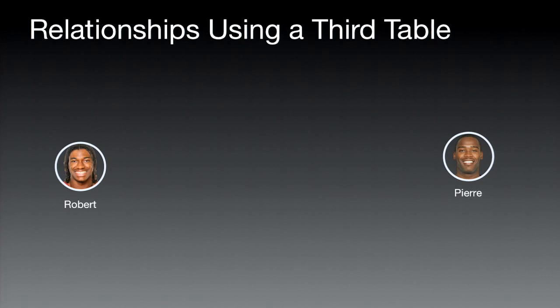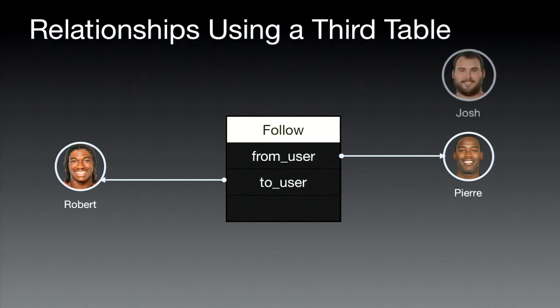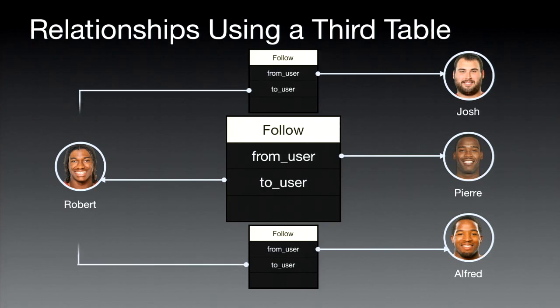It turns out Parse relations, under the covers, are just creating a little join table — which brings us to join tables. Most of us who have been programming for a while are familiar with this concept. For example, two users who want to follow one another: create a Follow table with two pointers — a 'from user' (the person doing the following) and a 'to user' (the person being followed). You can do the same for other followers. It's a simple little table with pointers assigned to different elements.